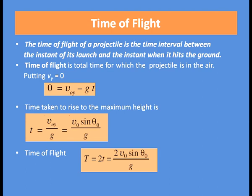What is time of flight? The time of flight of a projectile is the time interval between the instant of its launch and the instant when it hits the ground — the total time for which the projectile is in the air. Putting Vy = 0: 0 = Voy − g·t.